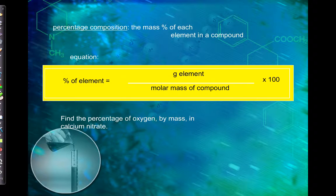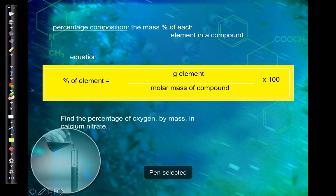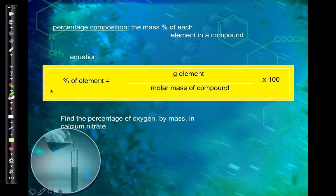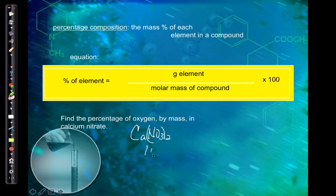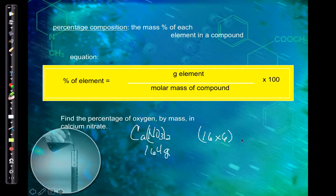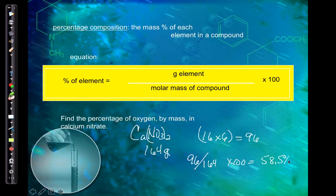Let's find the percent of oxygen in calcium nitrate. Remember, this is a mass percent, so you must compare to mass — if given a volume, you need to convert it to mass first. For calcium nitrate Ca(NO₃)₂, the total molar mass is 164 g/mol. Oxygen has a mass of 16, there are 6 atoms, giving a total oxygen mass of 96. So 96 divided by 164, times 100, gives 58.5% oxygen.